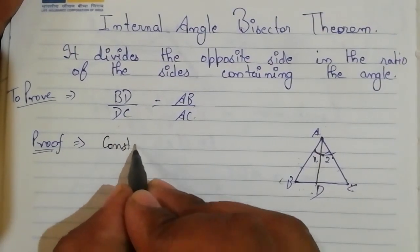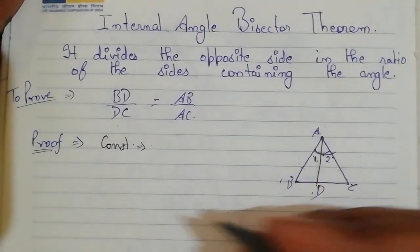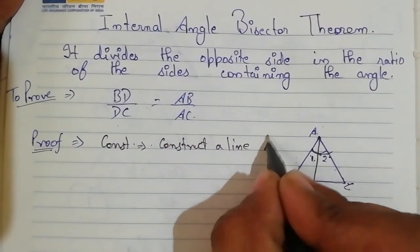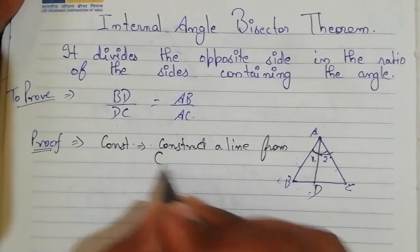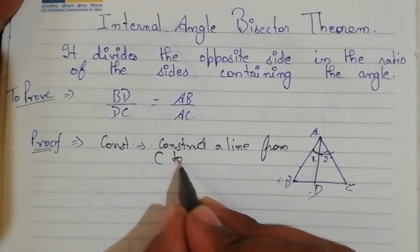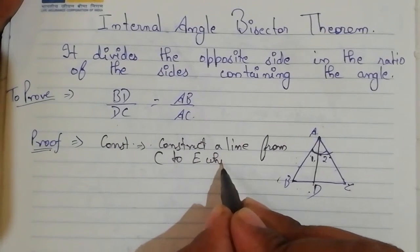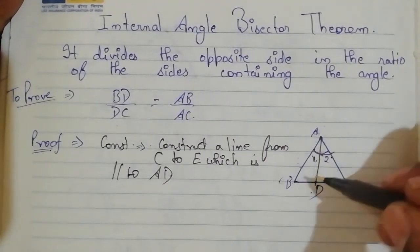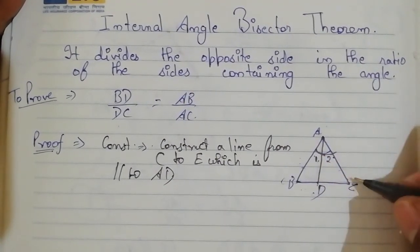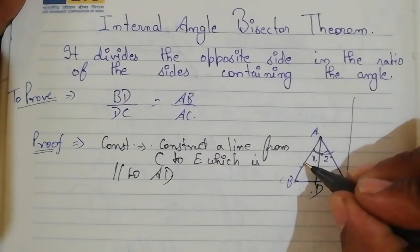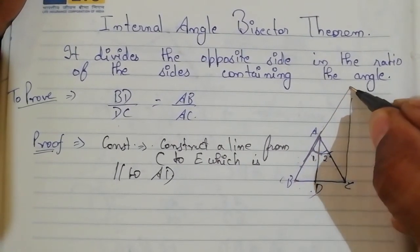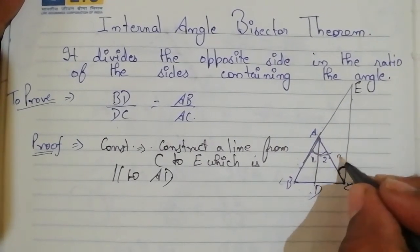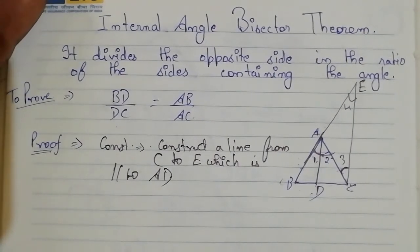For the proof, we need a construction. We will construct a line from point C up to point E, which is parallel to line AD. We name this angle as angle 3 and this angle as angle 4.